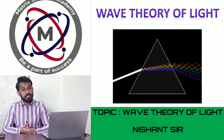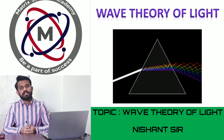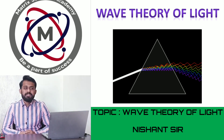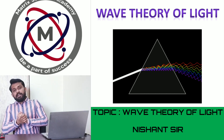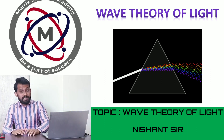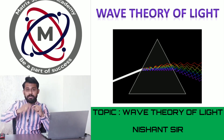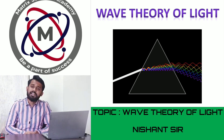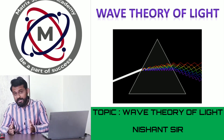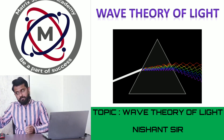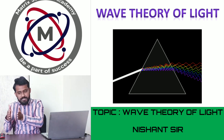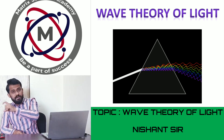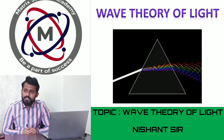Today we are going to start with a new topic: wave theory of light. Before we begin, let us understand what light is. Light is basically a form of energy that propagates in the medium in the form of electromagnetic waves. These electromagnetic waves are formed because of vibrations of the electric field, and those vibrating electric fields generate a magnetic field in the perpendicular direction, as we have seen in last year's electromagnetic waves topic.